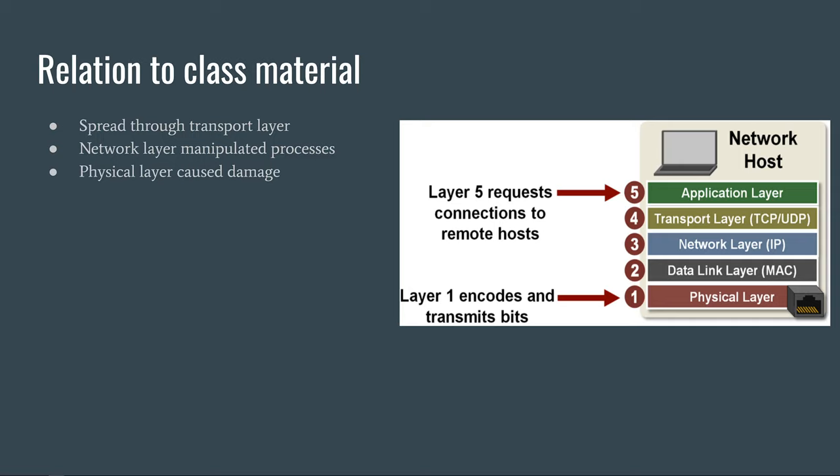Stuxnet was spread by utilizing three of the seven network layers. The transport layer was used to spread the malware and identify its targets. The network layer was utilized in manipulating process control of the plant, and the physical layer was used to perform the actual damage to the system. The Stuxnet attack is a prime example of how these three layers can interact with one another to cause true damage to a network environment.